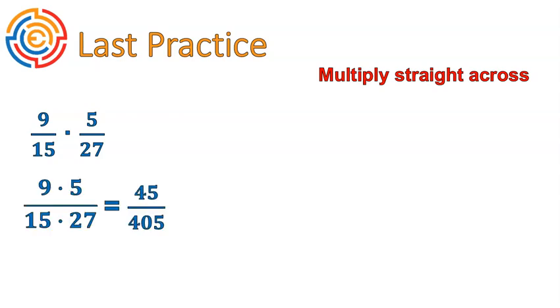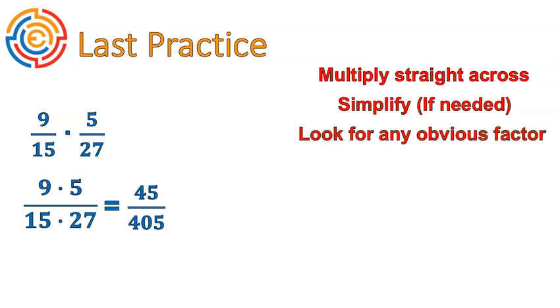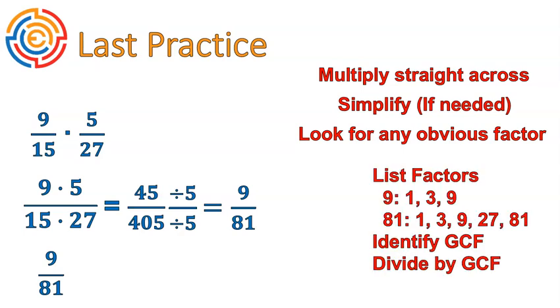First, we multiply straight across. 9 times 5 is 45. 15 times 27 is 405. Those are some big numbers. So I'm going to simplify. Now, I can see that both numbers, 45 and 405, end with a 5. So for me, that's an obvious factor. I'm going to divide both of them by 5 and that leaves me with 9 over 81. Perfect. That is great. That works out for me really well because I know the factors of 9 and I know the factors of 81. So I can list those factors, identify that 9 is my greatest common factor, and I'll divide both by 9 for my final answer.